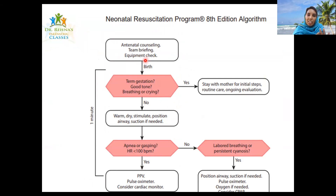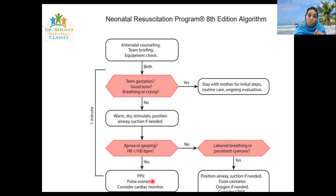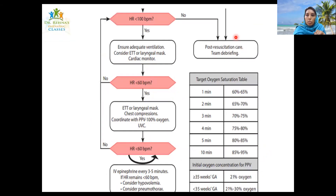Looking at the NRP 8 algorithm: before birth there is counseling, team briefing, and equipment check. After birth, assess tone and breathing or crying. If the baby stays with the mother, perform initial steps — which have been reordered in NRP 8: warm, dry, stimulate, position airway, and suction if required. If the baby has apnea, gasping, or heart rate less than 100, consider positive pressure ventilation, and the cardiac monitor now comes in here.